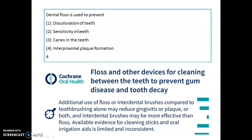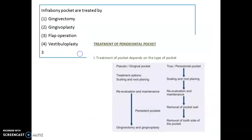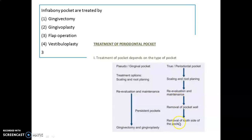We use dental floss to prevent interproximal plaque formation. Infra-bony pockets are treated by flap surgery. There are two types of pockets: pseudo or gingival pocket. Treatment for both starts with scaling and root planing, followed by reevaluation and maintenance. If the gingival pocket persists, removal of the pocket wall is required, and if still unresolved, the tooth side of the pocket must be removed.